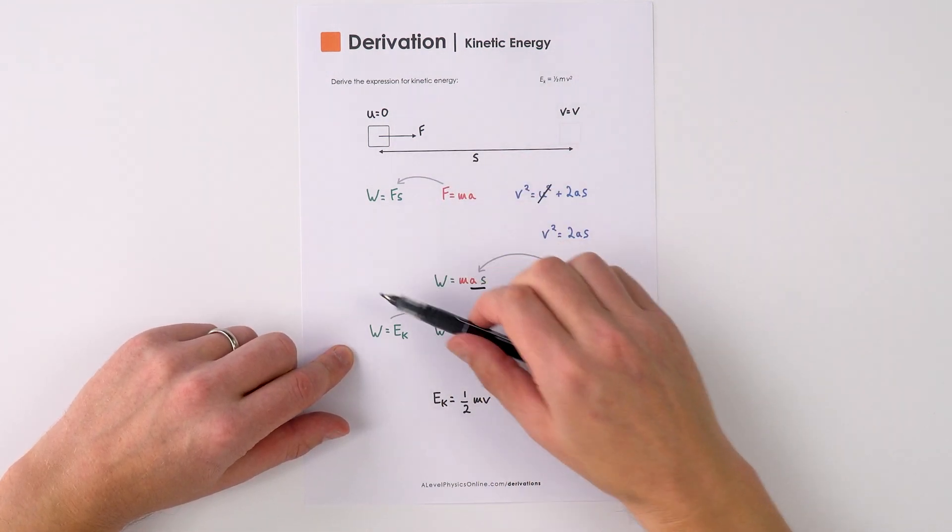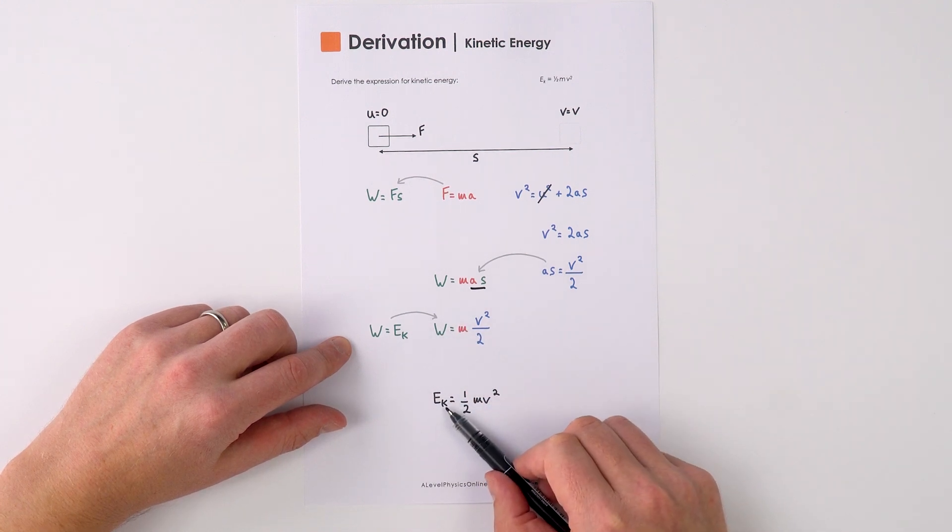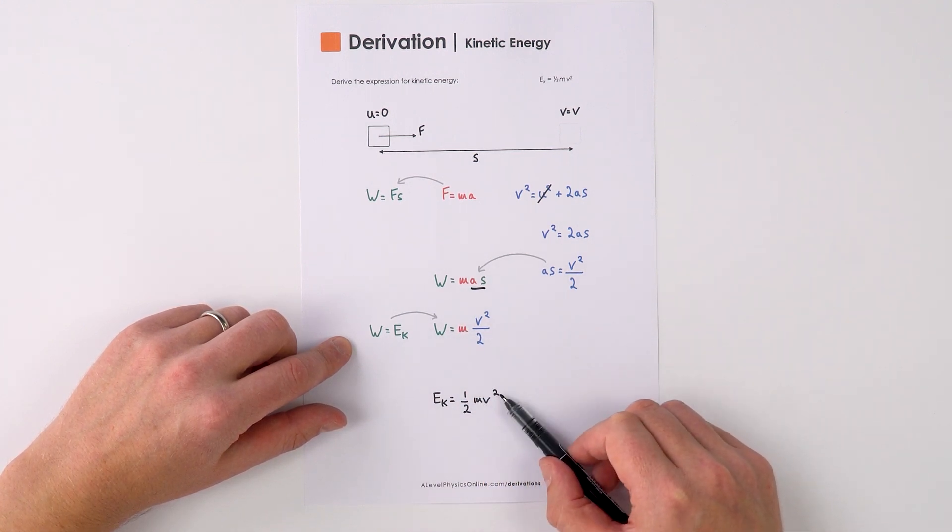But of course the work done in this object is going to increase its kinetic energy store, and therefore we can say that Ek, the kinetic energy, is equal to a half M V squared.